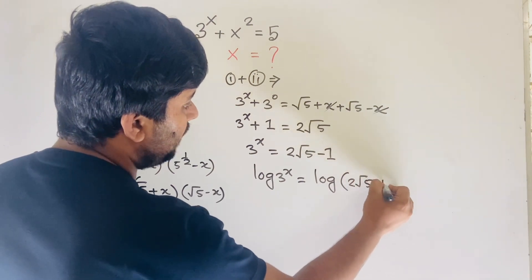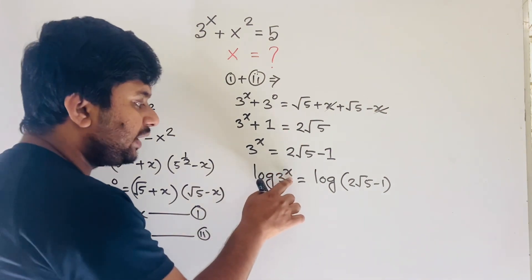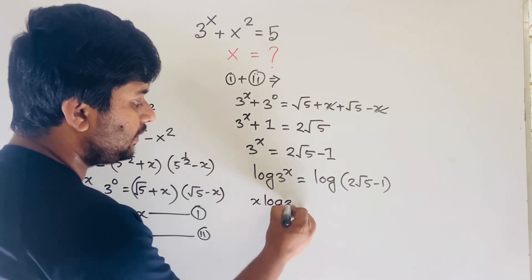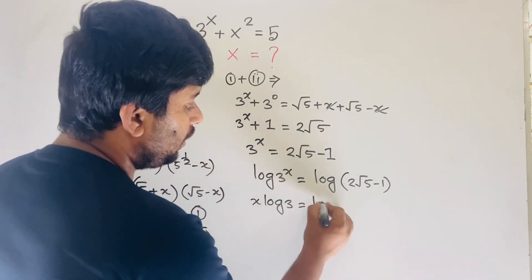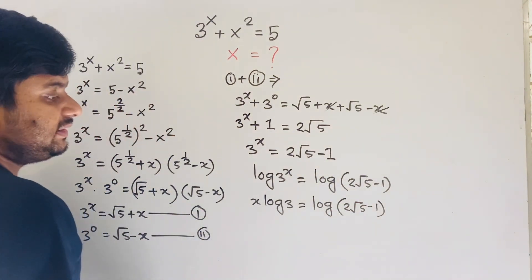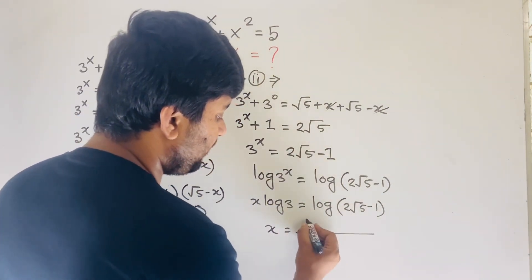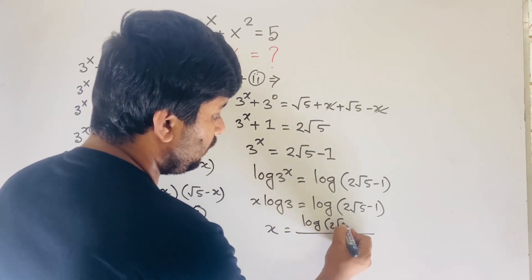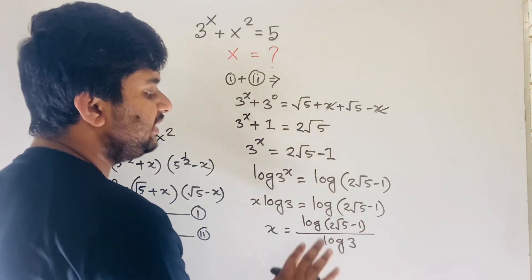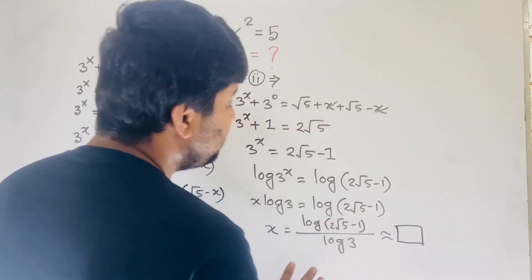Now applying natural log to both sides: log(3^x) = log(2√5 - 1). Using logarithm rules, the exponent x moves to the front: x·log(3) = log(2√5 - 1). Dividing both sides by log(3), our final answer is x = log(2√5 - 1) / log(3). Using a calculator, you can compute the numerical value.